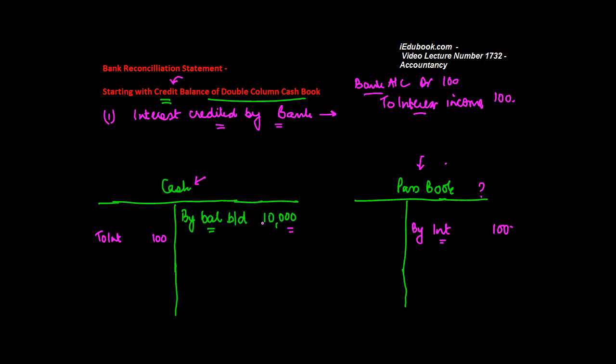Now if you're starting with a credit balance, effectively if you see and just have a look at this account, what does this tell you? This tells you we are doing nothing but reducing the credit balance because we are passing an entry on the opposite side. So when you prepare your BRS, what do you do? Nothing, you just subtract this amount of interest credited by bank. So let's say for example if I was just doing it here only, I will subtract this interest of 100 from the opening balance which was 10,000. Since this is a credit balance, you write a bracket in it.